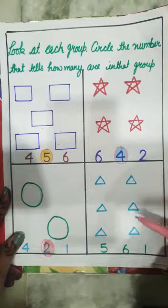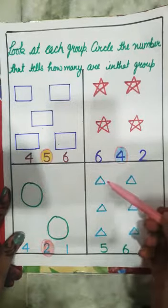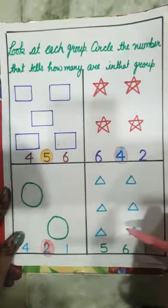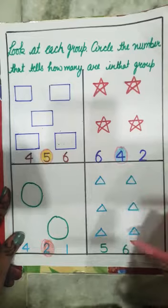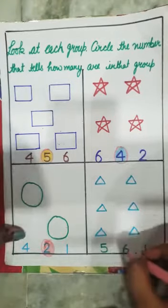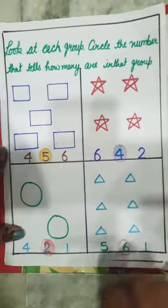Next we count the triangles. So we count triangles. One, two, three, four, five, six. How many triangles are there? Now we circle the number six and color it.